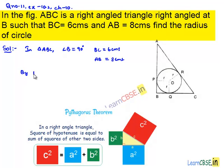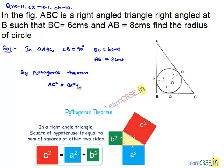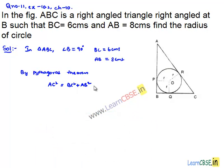Therefore, by Pythagoras theorem, we can say hypotenuse square, that is AC square, is equal to BC square plus AB square, which is equal to 6 square plus 8 square, which is equal to 36 plus 64. So that is 100. From this, we get AC is equal to square root of 100, that is 10 cm.